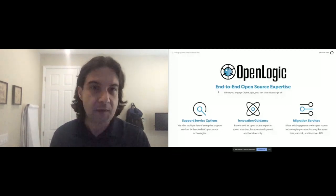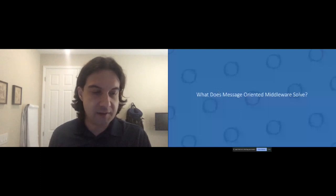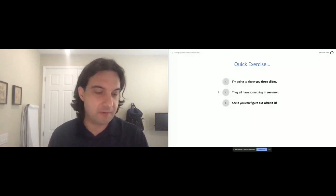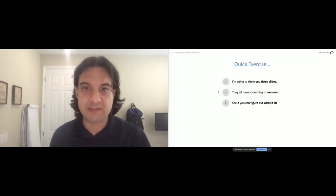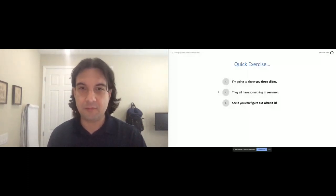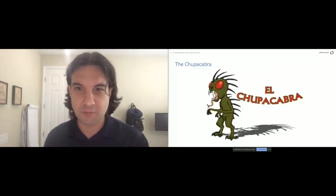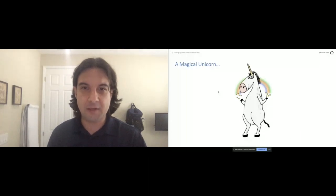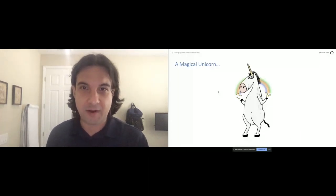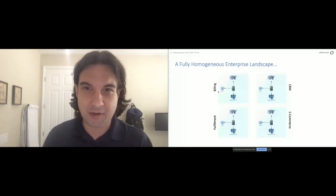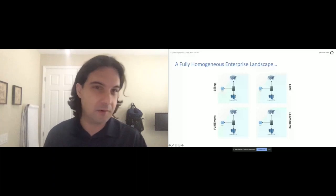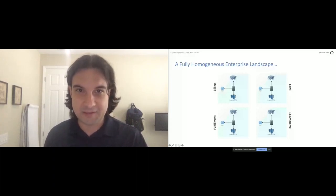What is it about enterprise integration patterns and messaging-oriented middleware that we use to solve business problems? Let's do a quick exercise. I'm going to show you three slides that all have one thing in common. The first is the chupacabra. The second is a magical unicorn. The third is a fully homogeneous enterprise landscape where every part of the business uses the exact same architecture, the same language, the same database — everything in all silos of the business.